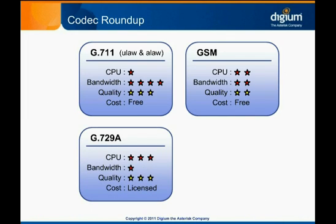G.729A is another codec that is popular with Asterisk. At 8 kilobits of bandwidth, it's even more compact than GSM, and offers slightly better sound quality. This is achieved through a sophisticated compression algorithm. Better compression means less bandwidth is required, but it also means that transcoding is more resource intensive. G.729 is not free for commercial use — license fees for its use are usually included in VoIP phones, but separate licenses must be purchased from Digium to transcode to or from G.729 in Asterisk. You can visit the product page for the G.729 licenses Digium offers by following the link in the Attachments tab of this presentation.